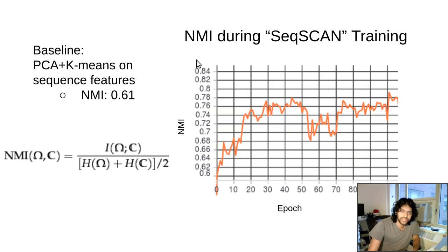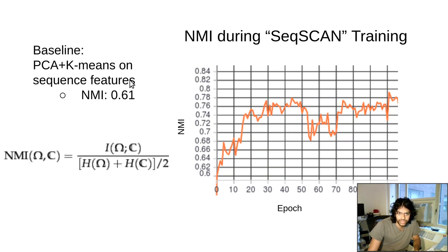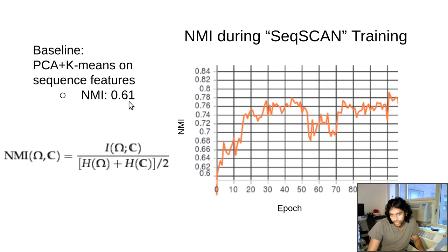When we train this model using these 10 protein families, we get a 0.78 NMI performance for SEEKSCAN. We compare this to a baseline of using PCA on the sequence features extracted from the language model followed by k-means, which reaches an NMI of 0.61. We outperform that baseline using the SEEKSCAN model.